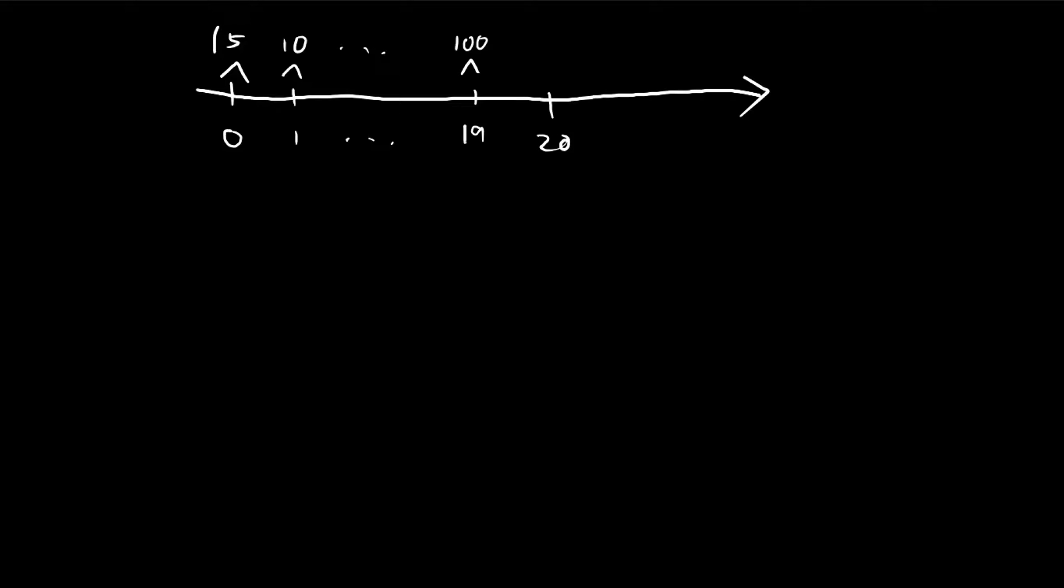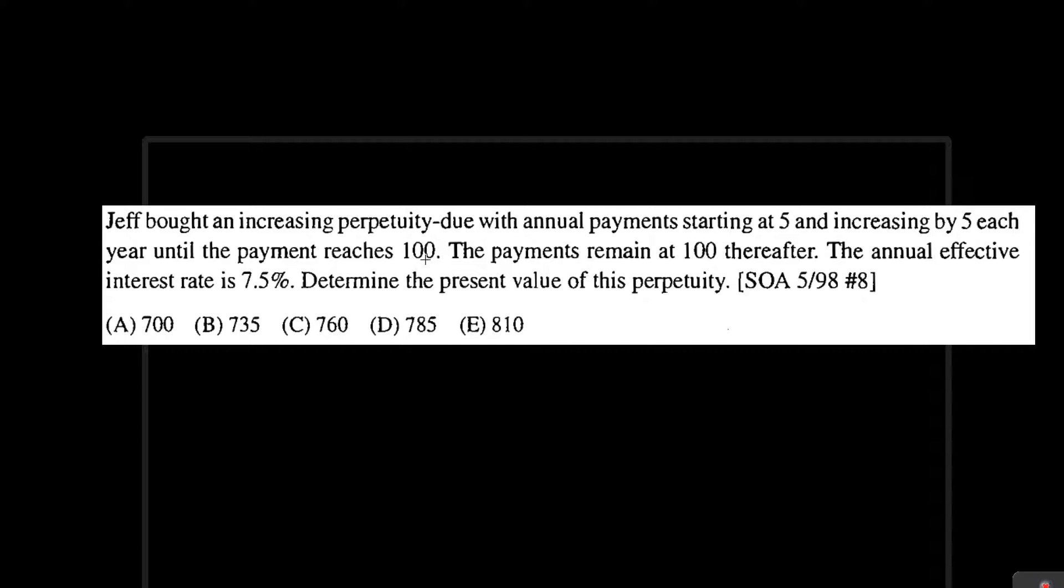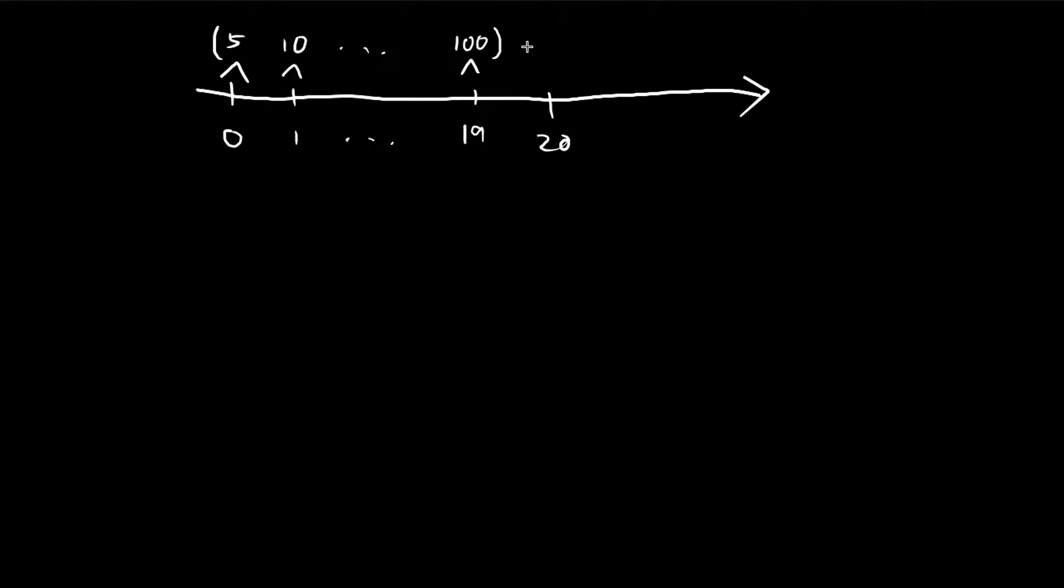You see that this section is essentially an increasing annuity. And then after the annuity reaches 100, it will just keep on paying at 100 till forever. So there's a second section over here that keeps on paying 100 all the way to infinity.